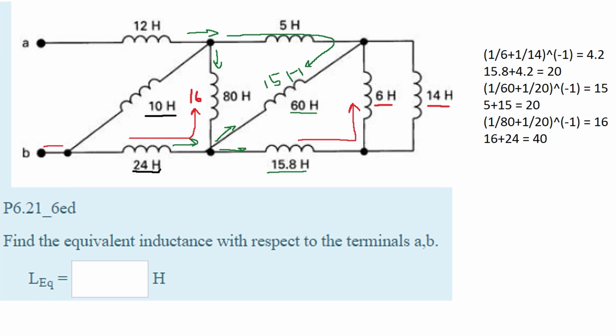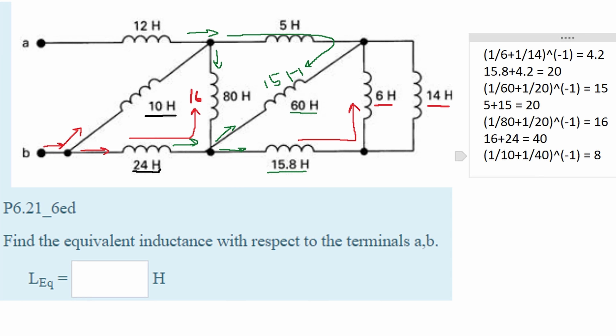Now if we run some current through here we can see it goes this way and this way, so that means the 10 Henry and our new 40 Henry inductor are in parallel. After we plug this into the parallel formula we get 8.